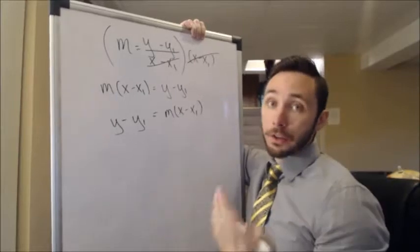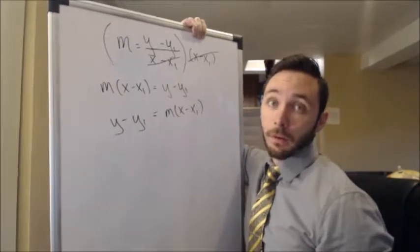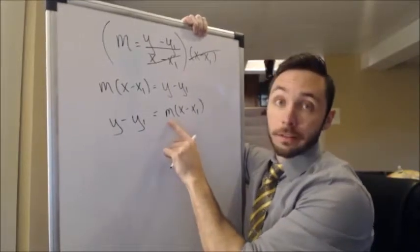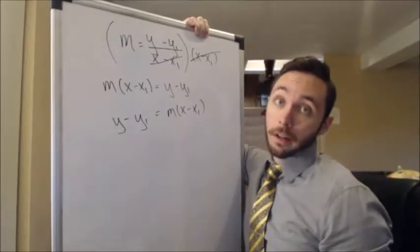Okay, so this idea right here should look familiar. It's actually a point-slope form of a line, which is just saying, well, if you have an arbitrary point and the slope of a line, you can create the equation of a line.